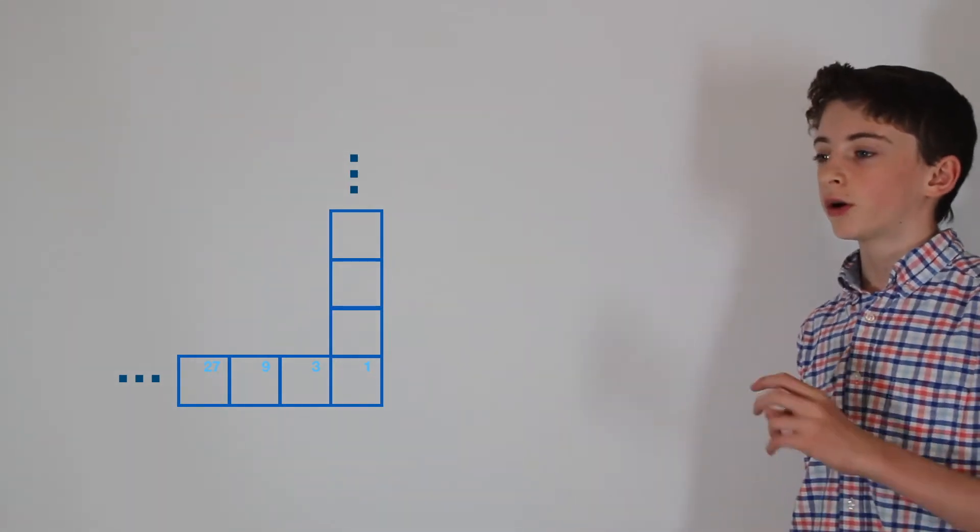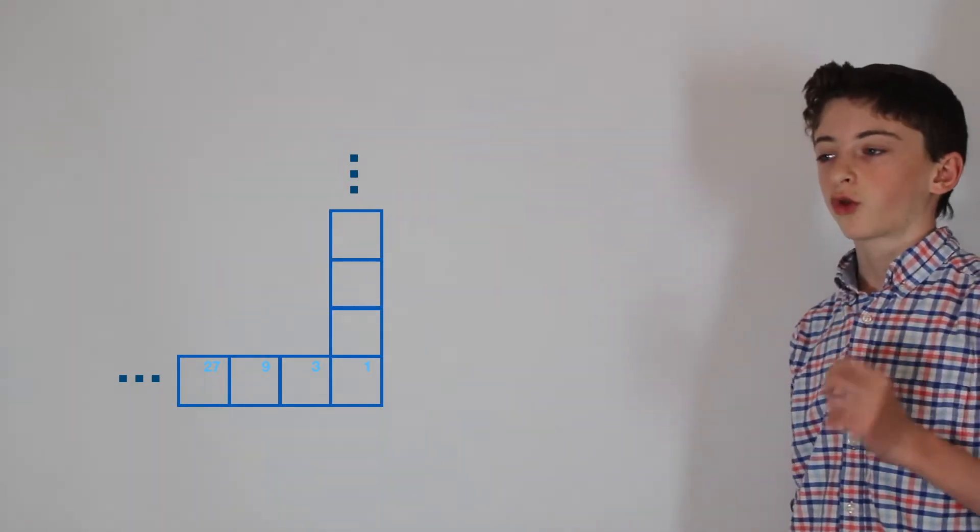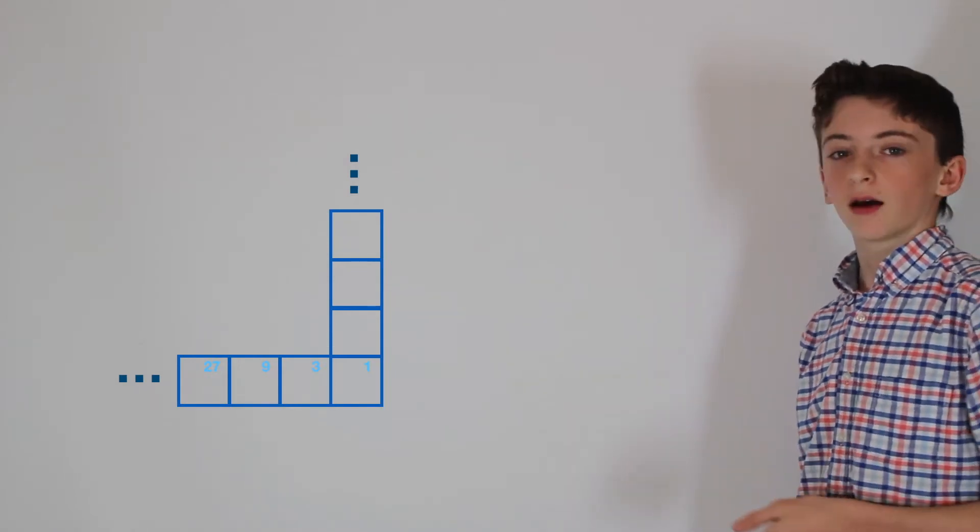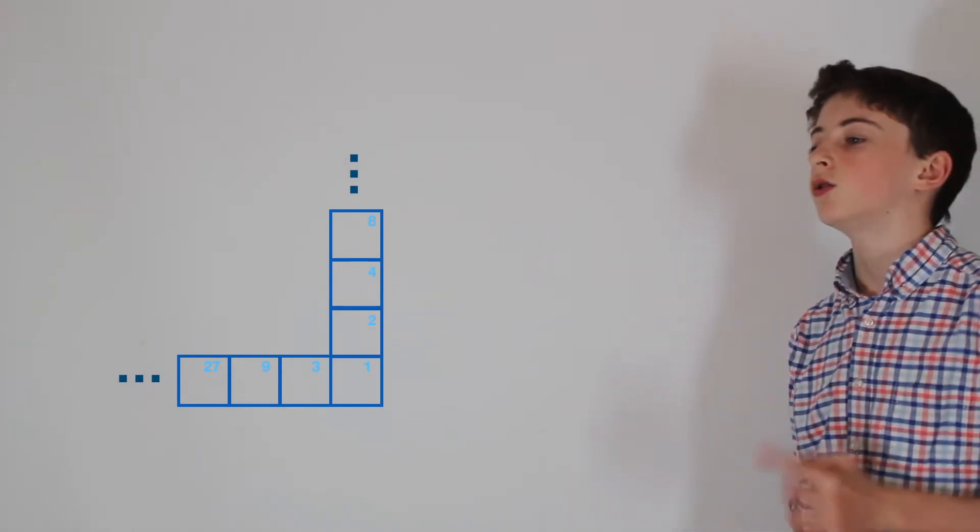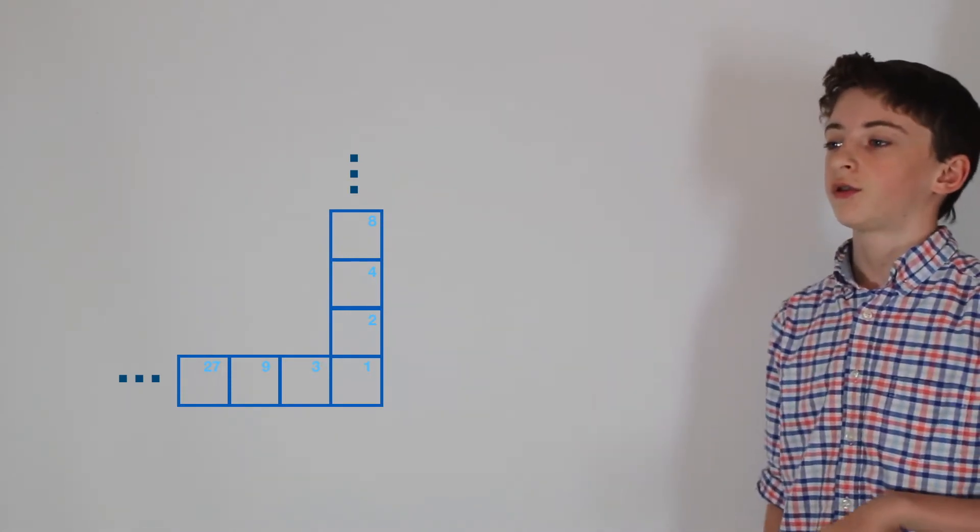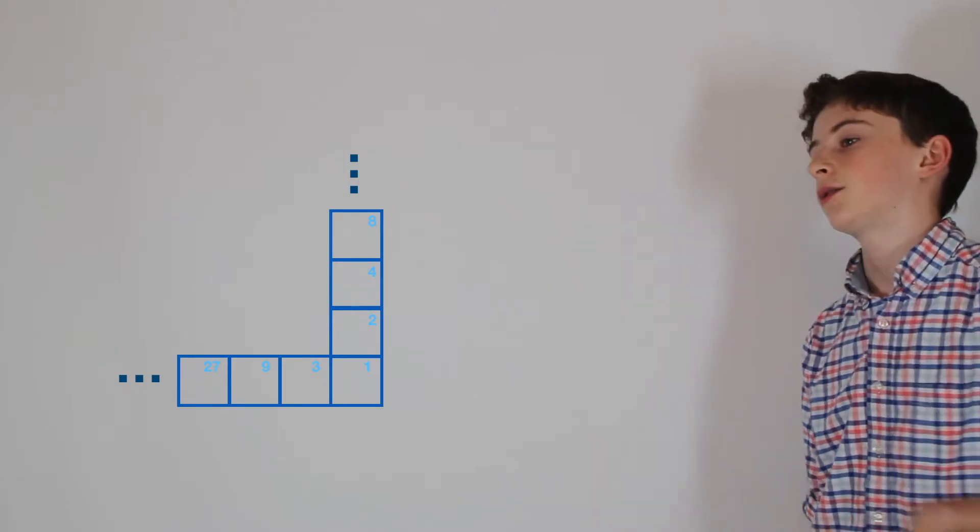So where the one that goes left to right is a three to one, a base three machine, the one that goes up and down, it's going to be a base two machine with the normal values, one, two, four, and eight, and so on, sixteen.